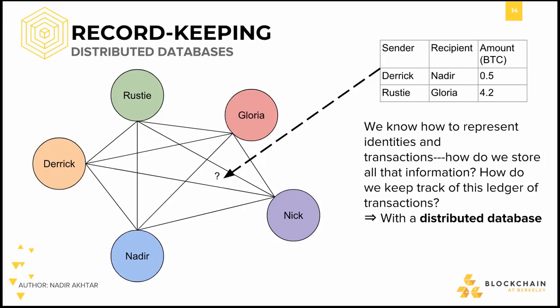To save this information, we need some form of database. A database is a store of information, and there are many types and implementations of databases. To understand which type of database we need to use in Bitcoin, let's recall the requirements of the Bitcoin protocol. We want no central entity in control of the information in the network, and we want a way for anyone to be able to read and write to the history of transactions. Hence, we want to use a distributed database.